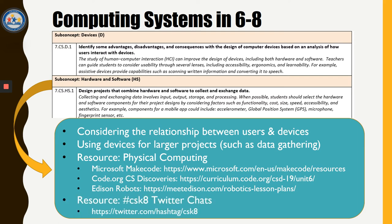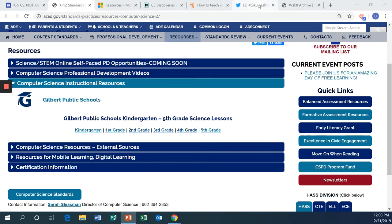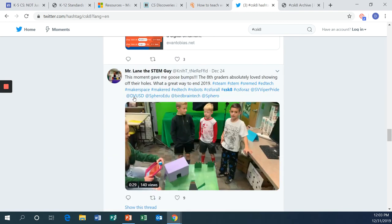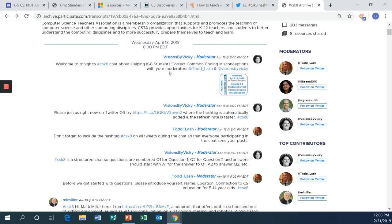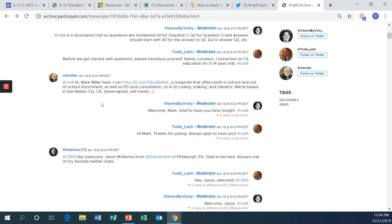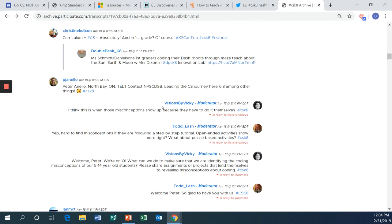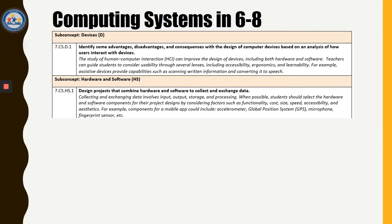Another useful resource to gather ideas for these standards at the 6-8 level is the CSK8 Twitter chats. These are weekly structured conversations on Twitter involving K-8 teachers across the nation where they share resources, discuss ideas, and ask for help centered around a particular topic. You can participate or lurk in these chats by following the hashtag CSK8 on the night of a chat, or you can search through archives of past chats to see a wealth of resources and topics that different teachers have shared.